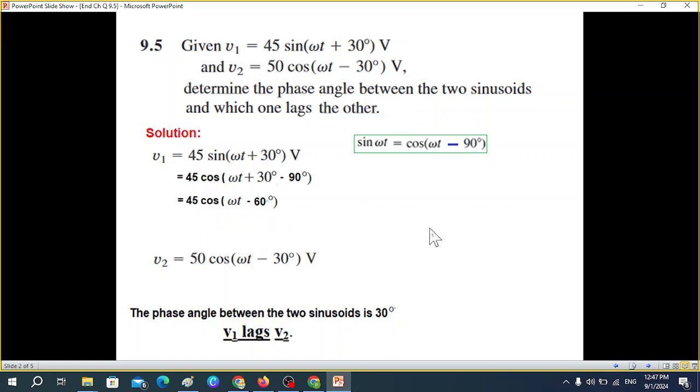A better method is to convert the signal to phasor form. In phasor form, we take the time domain signal and write its magnitude and angle φ using bold notation. So in phasor form, V1 has magnitude 45 angle minus 60°.